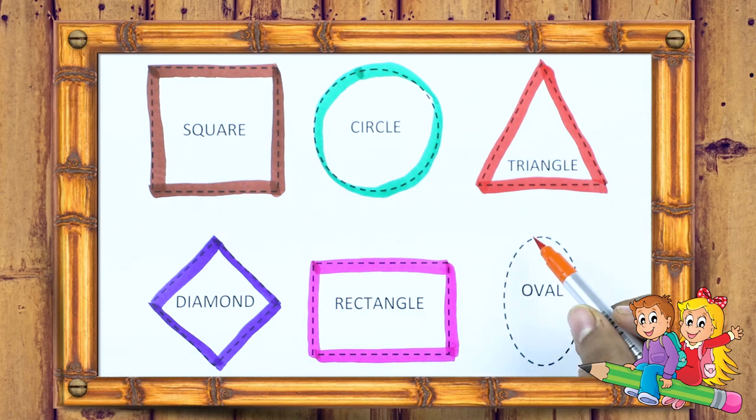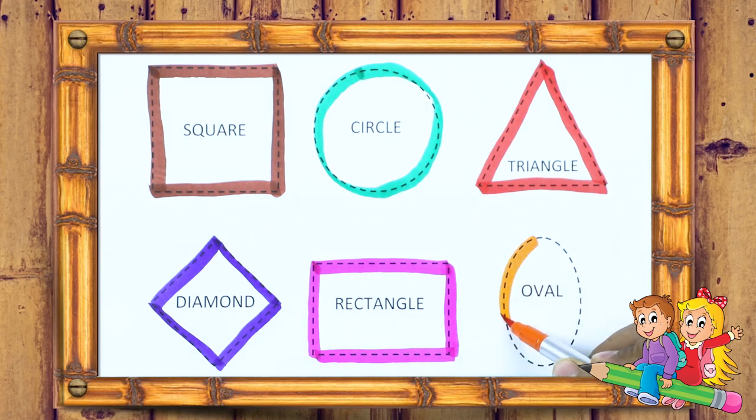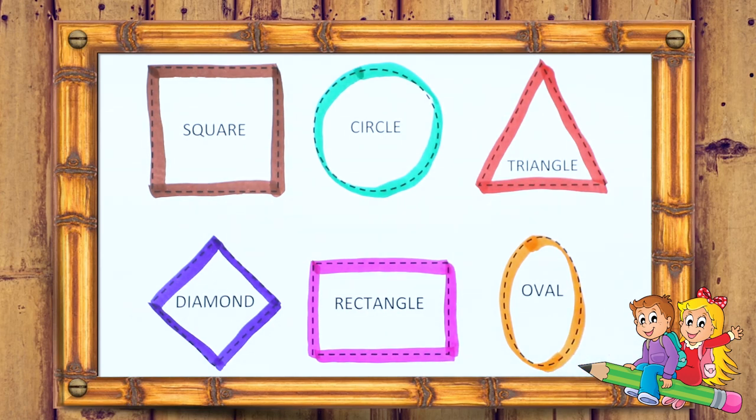Oval. We make oval with orange color. It's an oval.